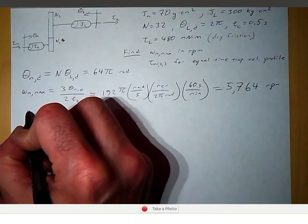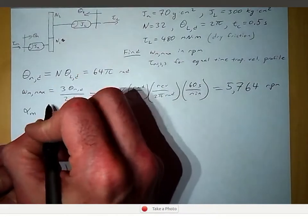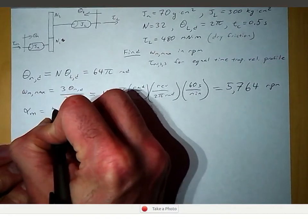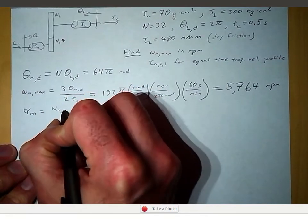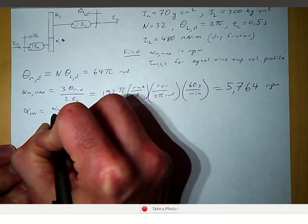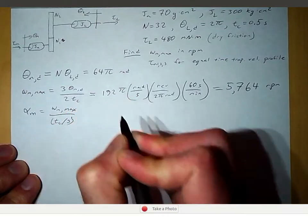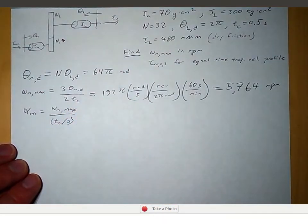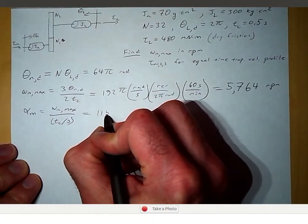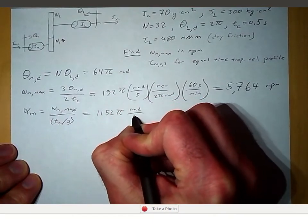In order to find the torque, we apply Newton's second law, so we need to find the acceleration of the motor shaft. For an equal-time trapezoidal velocity profile, the motor shaft acceleration is omega_m_max divided by TC over 3, which gives us 1152 pi radians per second squared.